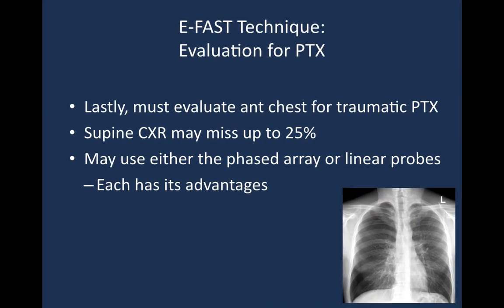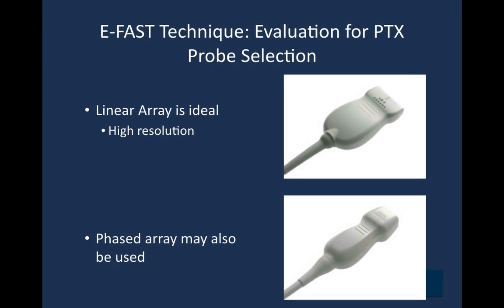In addition to looking at the pleural spaces, we evaluate for pneumothorax as part of the extended FAST exam. Remember, supine chest X-ray can miss up to 25% of pneumothoraces, so this adds a lot to the evaluation of a trauma patient. You can use either the phased array or linear probe — each has advantages. The linear array is ideal for high resolution visualization of the pleural line; however, it would require switching transducers since the rest of the FAST exam uses the phased array. In the interest of being fast, you can just leave the phased array on the machine and use that for the whole exam, or switch to linear specifically for this portion if you have a few seconds to spare.